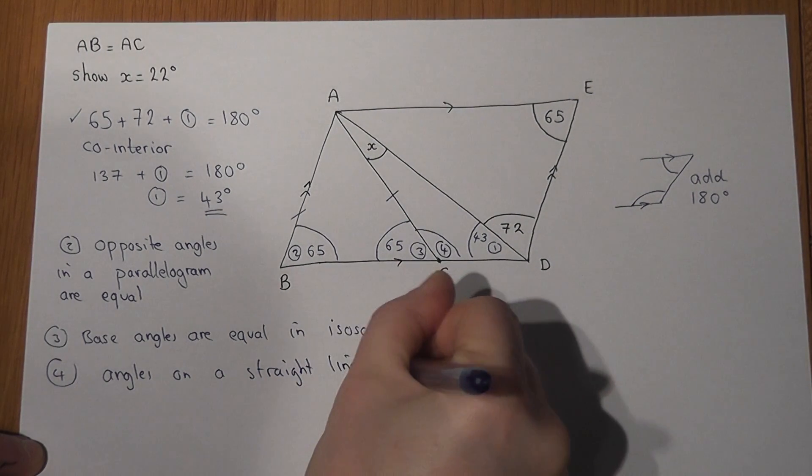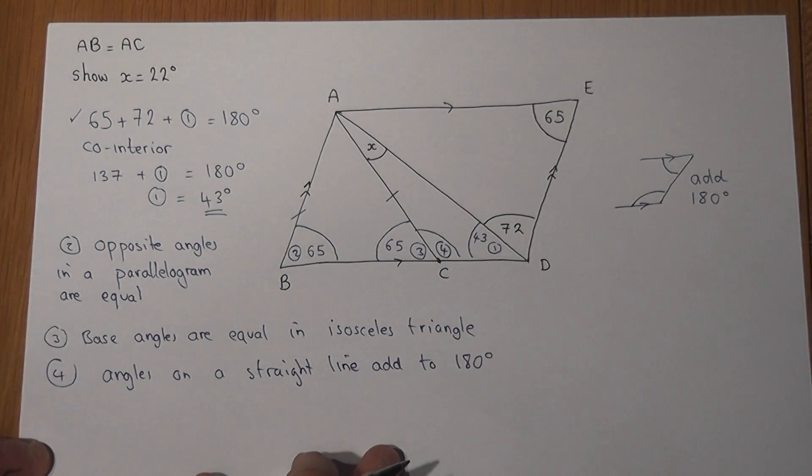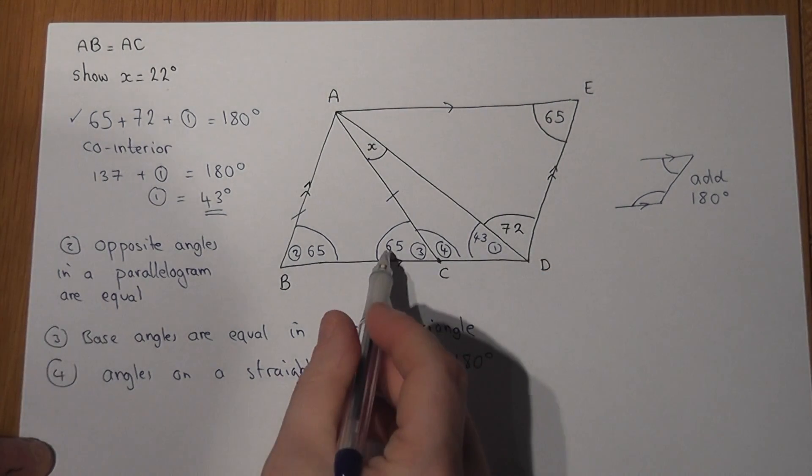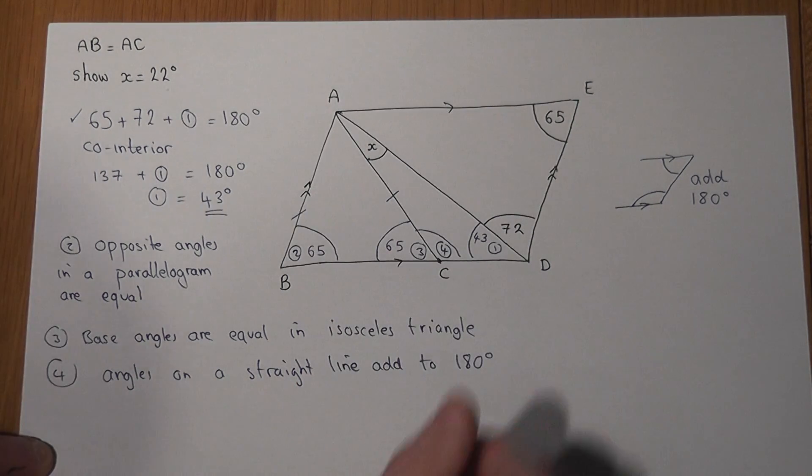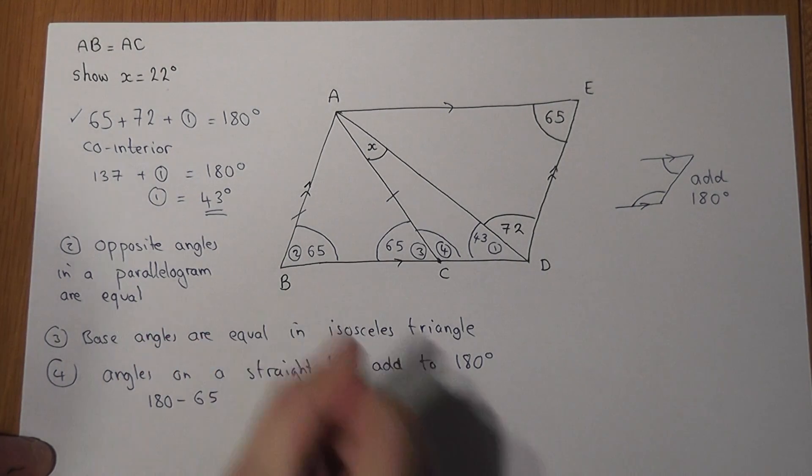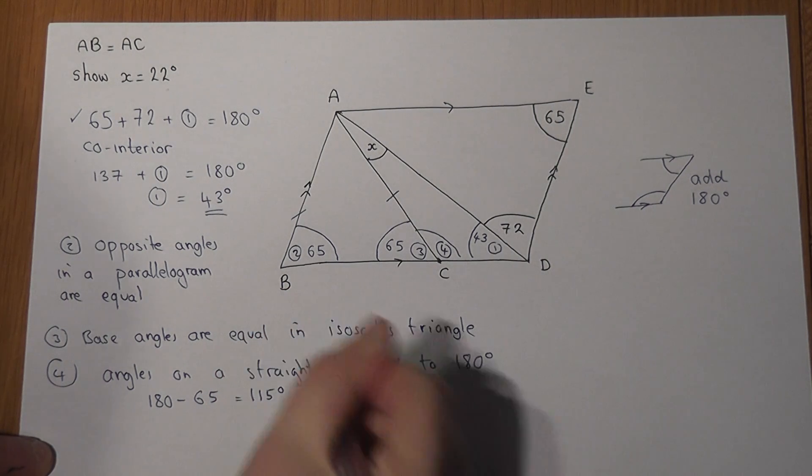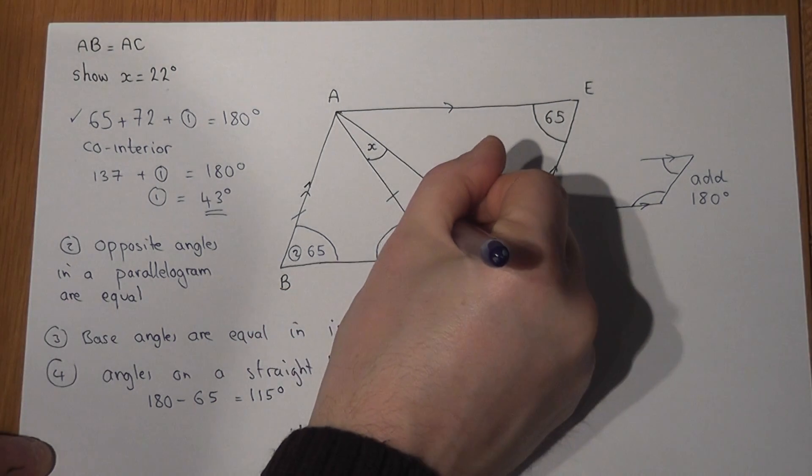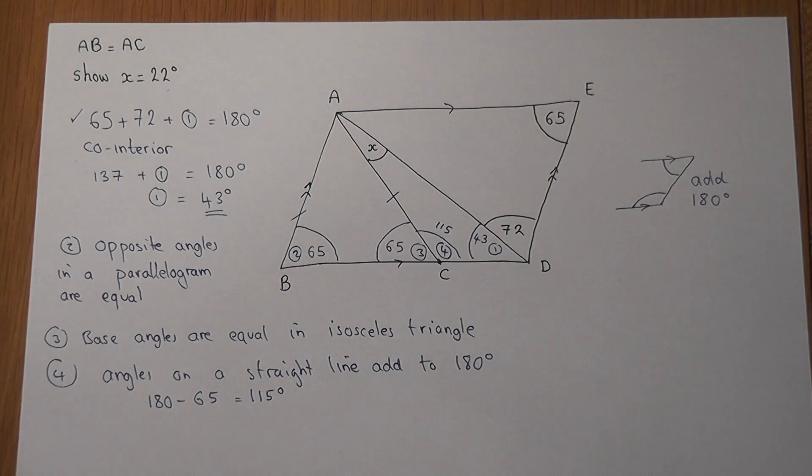So if I work out 180 take away 65, I can find out the leftover bit, angle four. So 180 take 65 is just equal to 115 degrees. Therefore that must be 115 degrees.